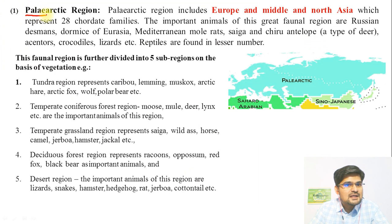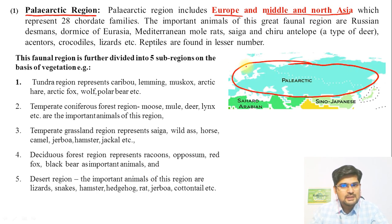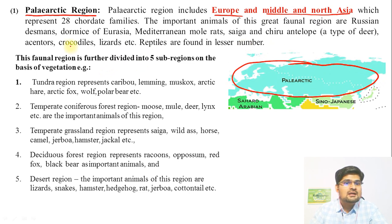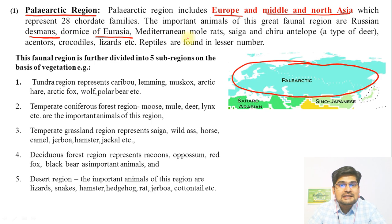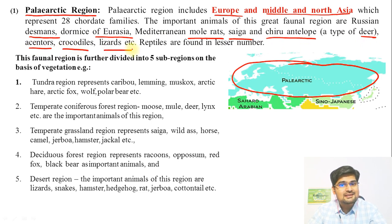The first region is the Palaearctic region, which includes Europe and Middle and North Asia. The most important animals of this great faunal region are Russian Desmans, Dormice of Eurasia, Mediterranean Mole Rats, Saiga, Chiru Antelope, Accentors, Crocodiles, and Lizards. Importantly, reptiles are found here in relatively smaller numbers.